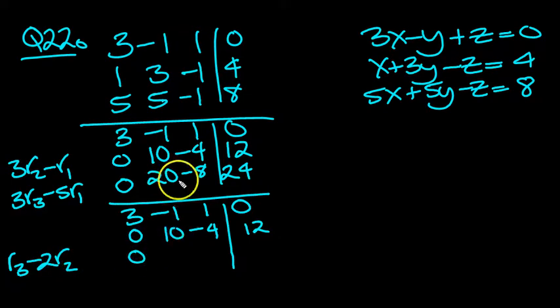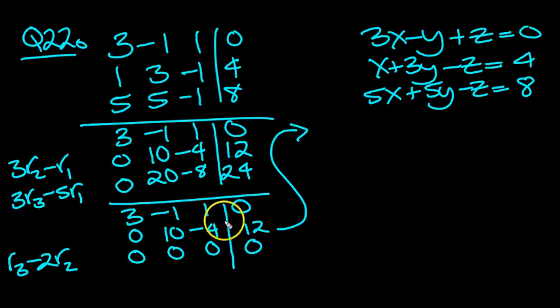0 take 0 is still 0, 20 take 2 of those 20s is 0, minus 8 take away 2 of minus 4 is plus 8, minus 8 plus 8 is 0. 24 take 2 times 12 is 24, minus 24 is 0.